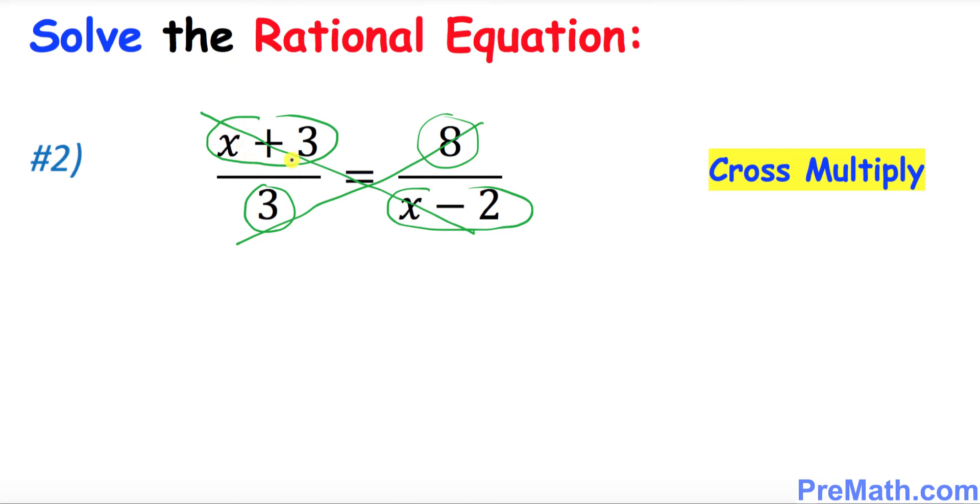Let's get started. I'm going to multiply x plus 3 times x minus 2 equals to 3 times 8. Let's use the FOIL method: x times x is x squared, x times negative 2 is negative 2x, positive 3x, and finally negative 6 equals to 24.